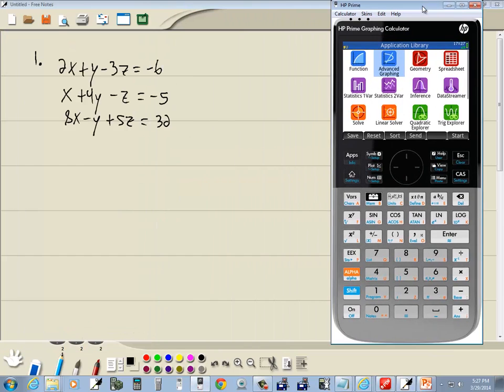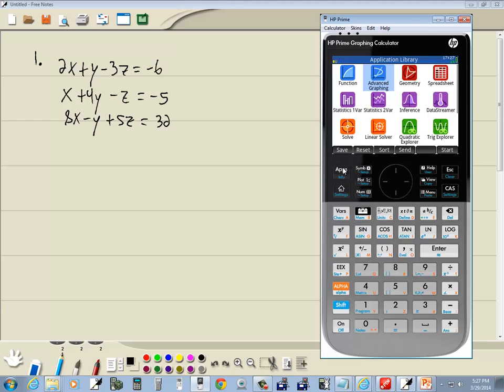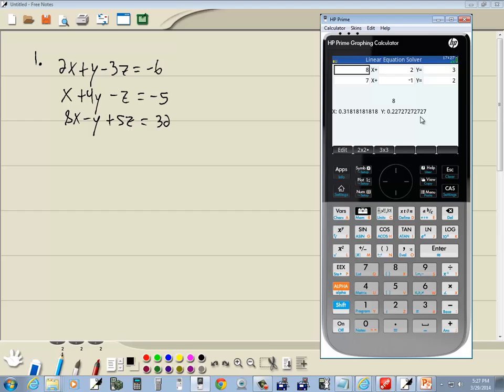In our calculator, we want to be in the apps menu. If you're not, press your apps button. We want to go down to Linear Solver. This is different than Linear Explorer, so make sure it actually says Linear Solver, and press enter.